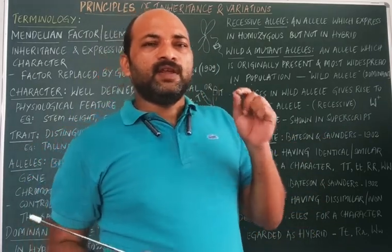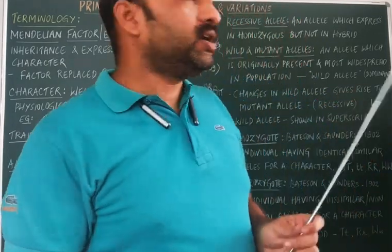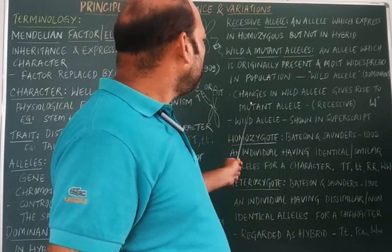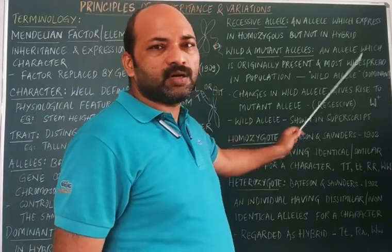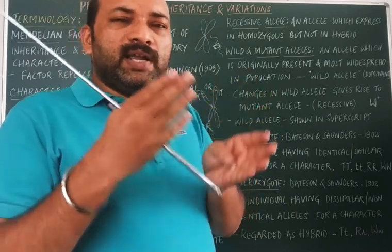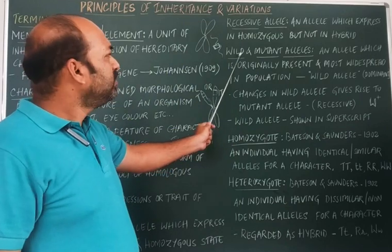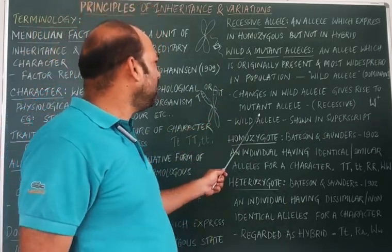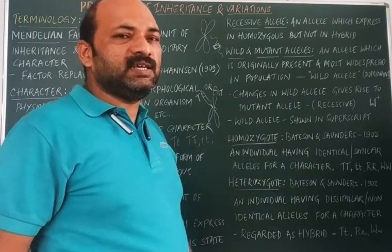When there is a change in the wild allele, that change gives rise to the mutant allele, and mutant alleles are always recessive. So whenever there is a wild allele and a mutant allele together, the wild allele will express while the mutant allele does not, because the wild allele is dominant whereas the mutant allele is recessive.